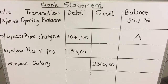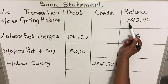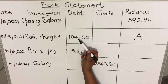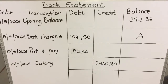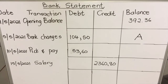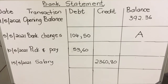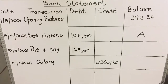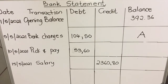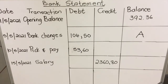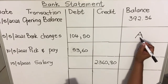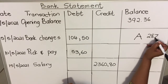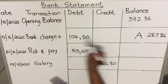So you look at the statement and say this person started with R392.36, and then this money was debited — meaning it went out of the account — so you're going to subtract it: R392.36 minus R104.50. So on your answer sheet you write A = R287.86, meaning on the fifth this is the money remaining in their account.